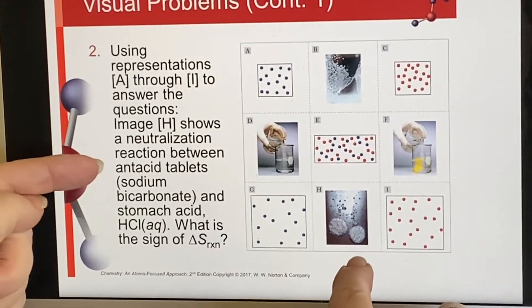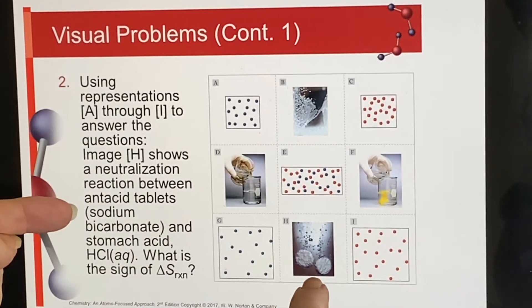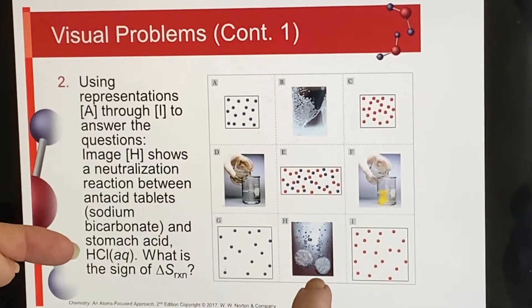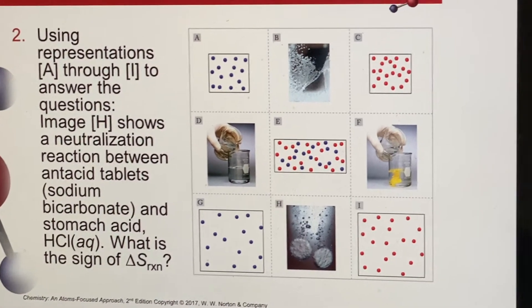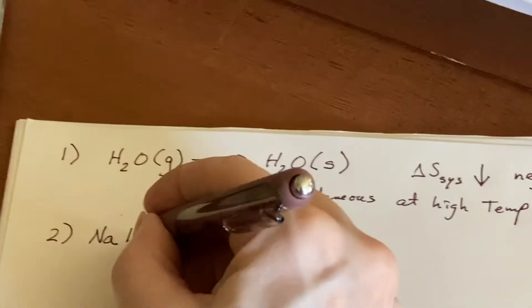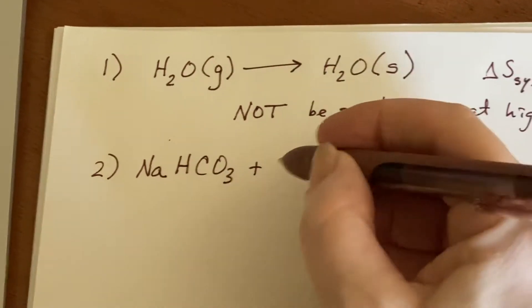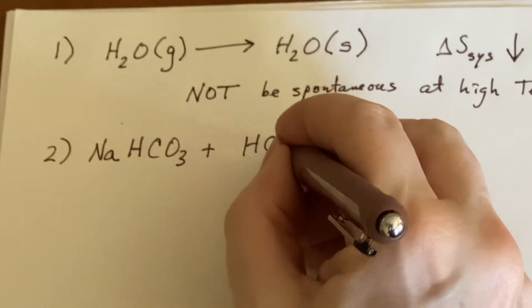Now we're going to look at image H. Now this is a neutralization reaction between antacid tablets and stomach acid. It said it's sodium bicarbonate. Now that's the old wording. We would normally now say sodium hydrogen carbonate. And they said stomach acid, hydrochloric acid.